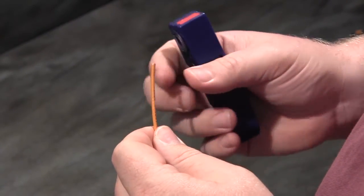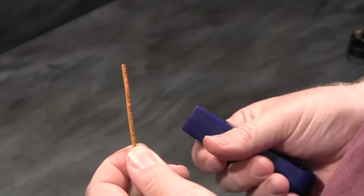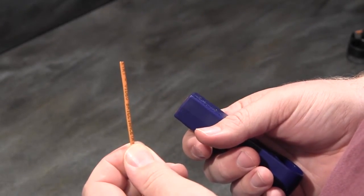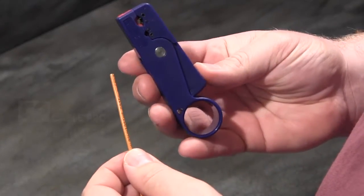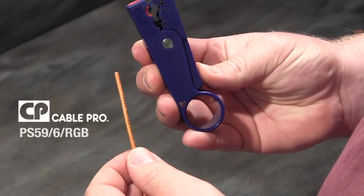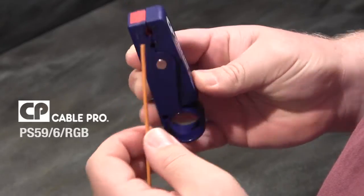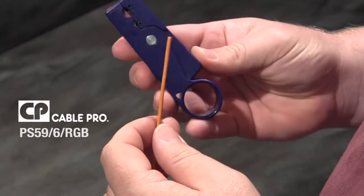Cable preparation for small cables such as Belden's 179DT is a critical step in the process of termination. I'll use Belden's CablePro one-quarter by one-quarter prep tool with a red cartridge installed for miniature cables.